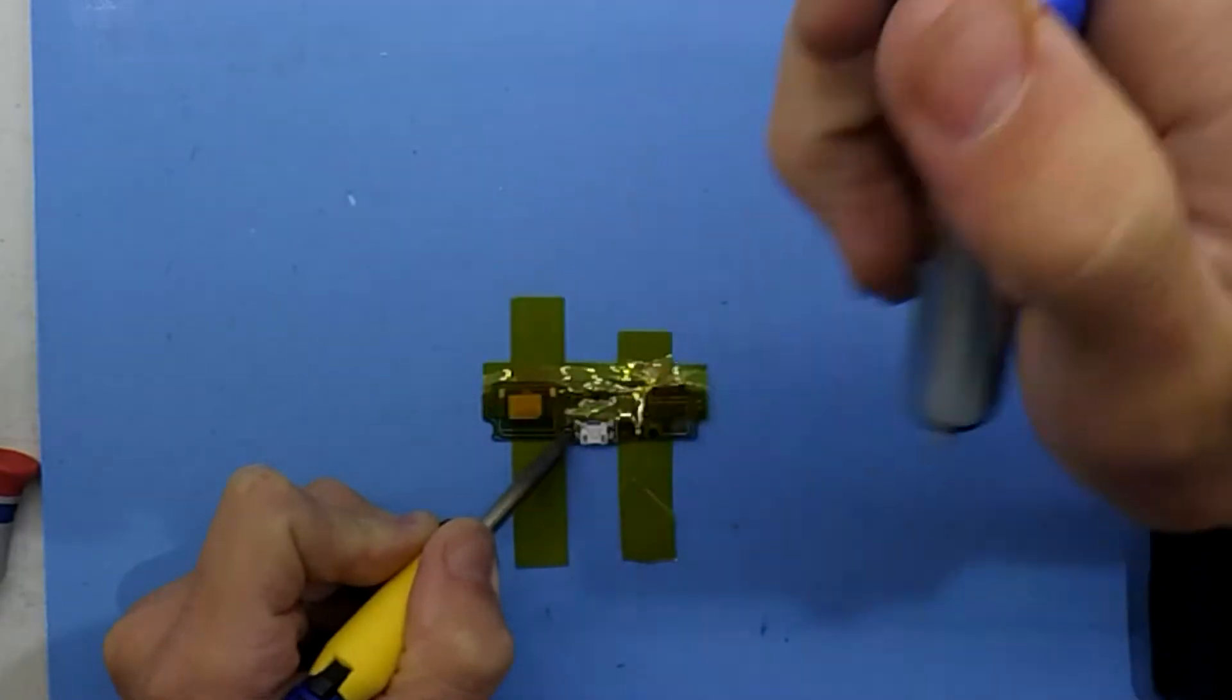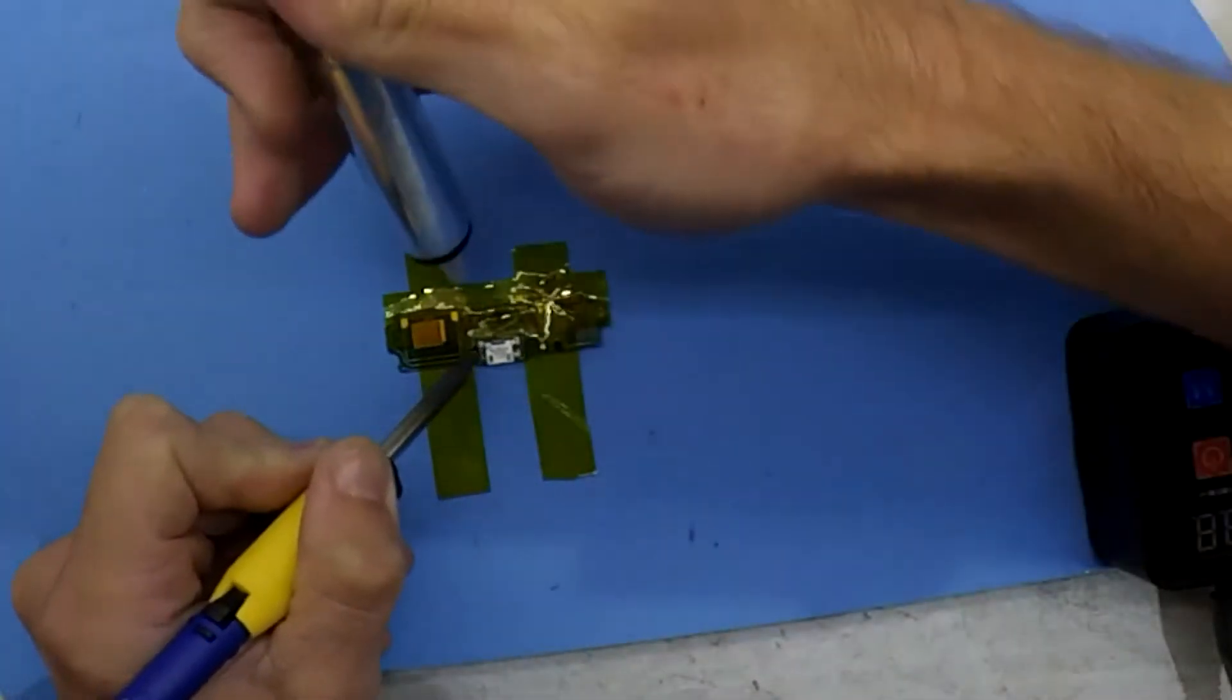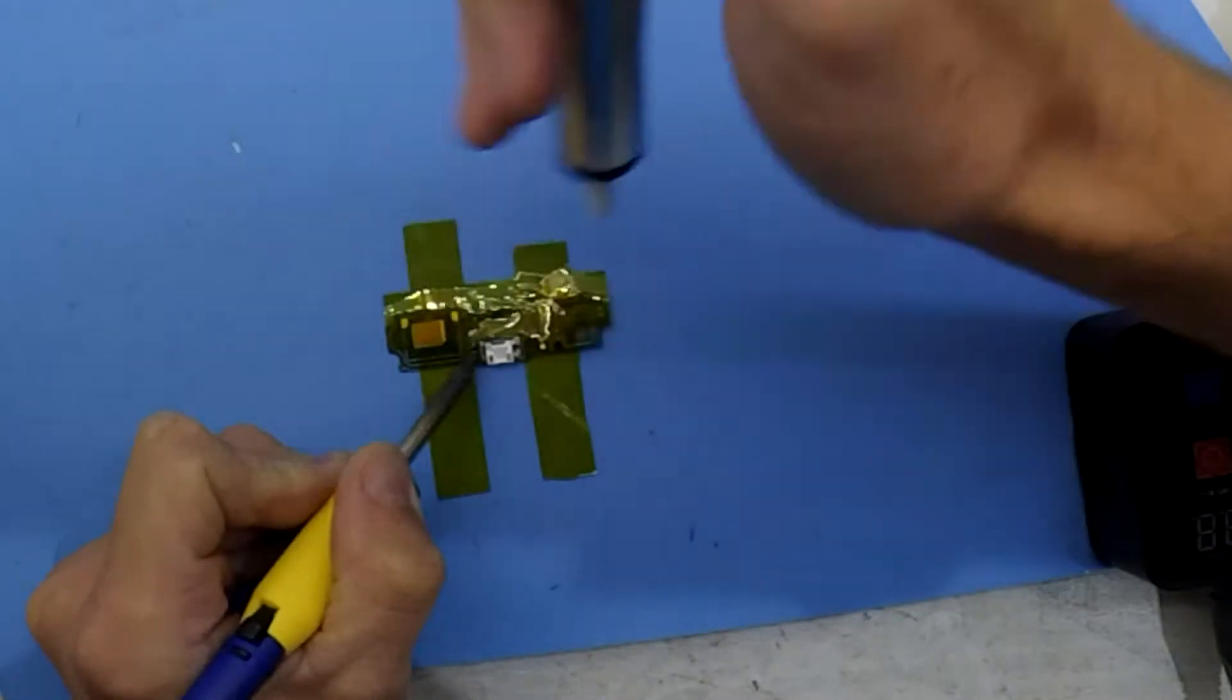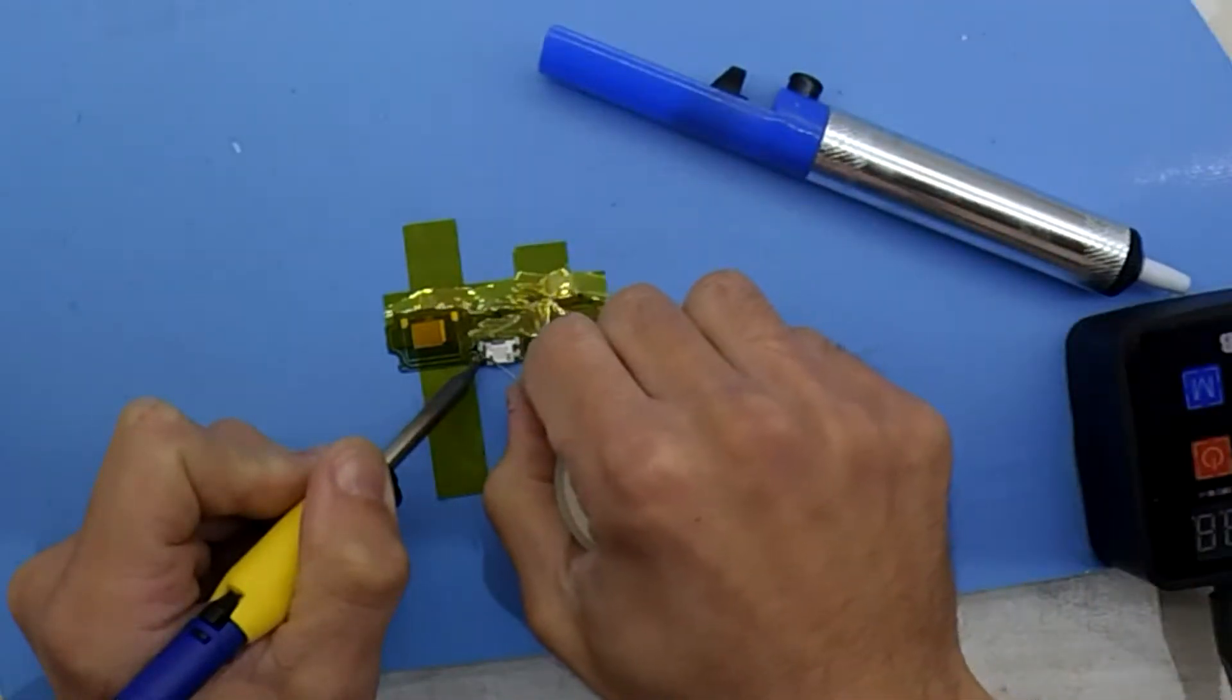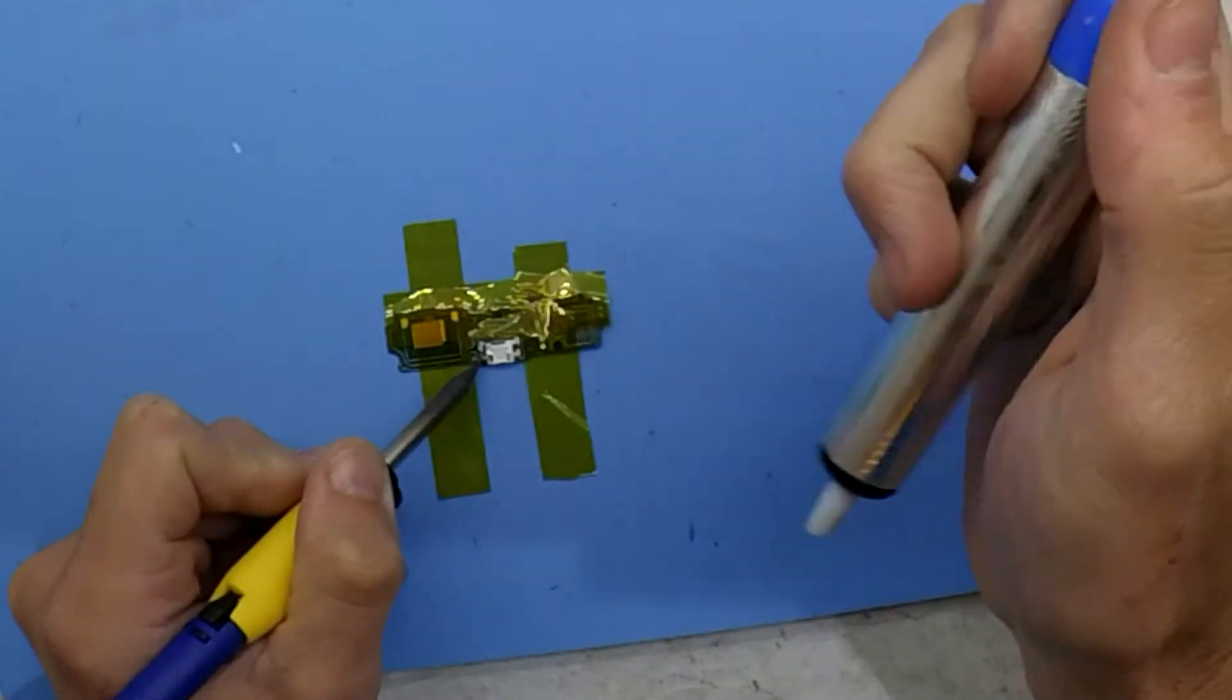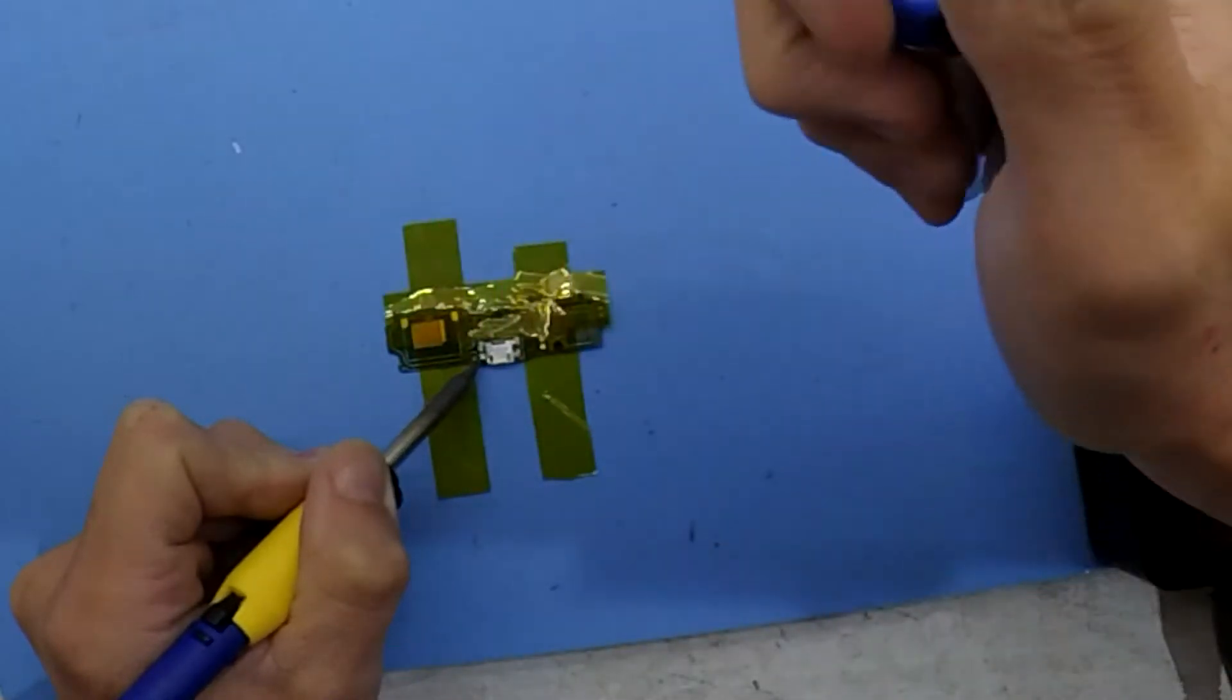Right now I'm heating up each corner, diluting it and then removing the solder so that will enable me to lift it up. My next plan is once I get a little bit of angle on it, I'm going to give it a heat hit with a heat gun, the Quick 861 DW, at around about 250 degrees Celsius. From there I should be able to lift this jack off.